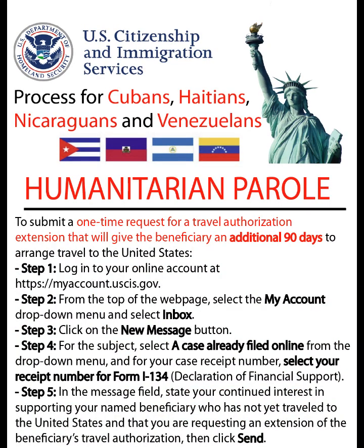To submit a one-time request for a travel authorization extension giving the beneficiary an additional 90 days to arrange travel to the United States: Step 1 — Log into your online account at https://myaccount.uscis.gov. Step 2 — From the top of the webpage, select the My Account drop-down menu and select Inbox. Step 3 — Click on the New Message button.